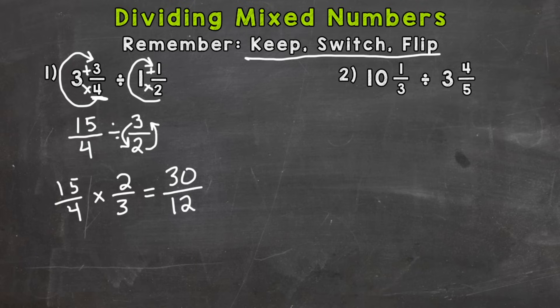So 30 over 12 is our final answer, but we don't want to leave it as an improper fraction. So we need to change it to a mixed number. How many whole groups of 12 can we pull out of 30? 30 divided by 12. Well, 12, 24, two whole groups of 12 can be pulled out of 30 with a remainder of 6, and we keep our denominator of 12 the same.